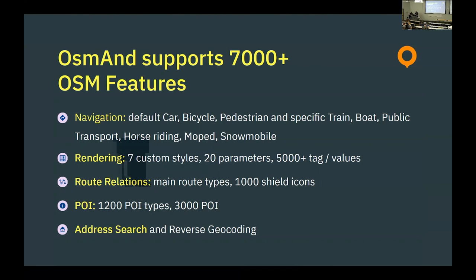A few words on how we actually use OpenStreetMap: we are pretty heavily using the data. I recently counted that we support more than 7,000 features — basically tag values — for navigation. We recently added interesting navigation types like trails and trains. We also support public transport. What's most important is that once we introduced public transport, people started mapping more for it. Even though it's still imperfect, we see the quality of data growing — it's always a collaboration.